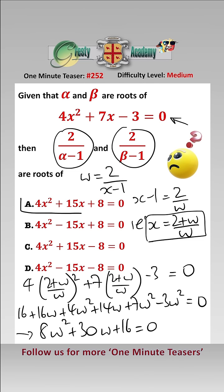And if we divide everything by 2 there, we get the answer A: 4x squared add 15x add 8 equals 0.